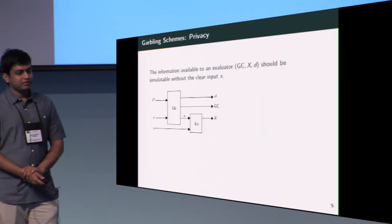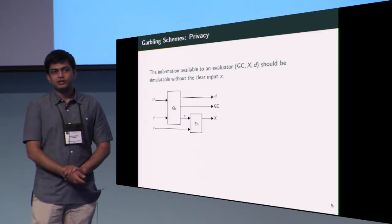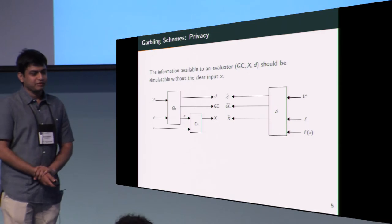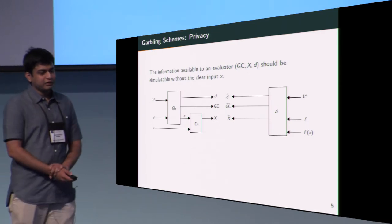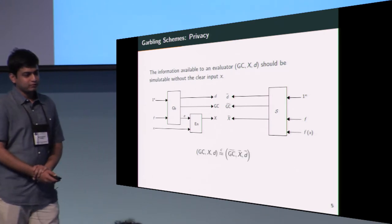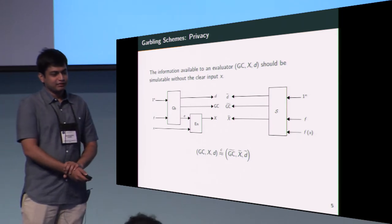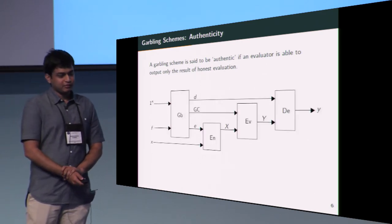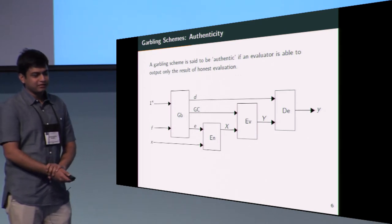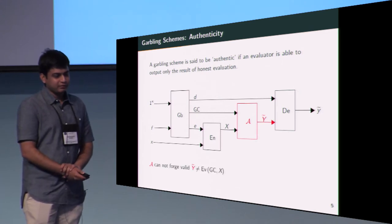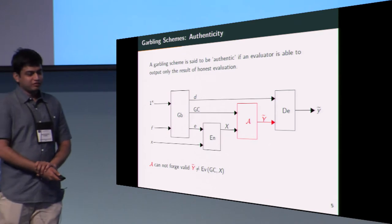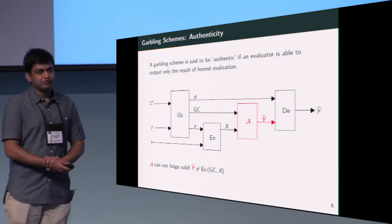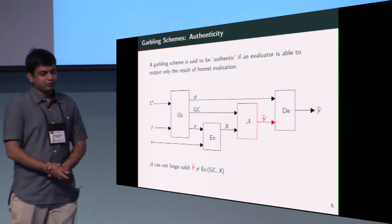Privacy informally captures that the information available to an evaluator leaks nothing about the input that was used to generate it. This is formalized by requiring the existence of a simulator that produces the same values—the garbled circuit, encoded input, and decoded information—without access to the actual clear input. It's computationally indistinguishable from honestly generated values. Authenticity captures the unforgeability of garbled outputs. If we're taking a look at the garbling scheme flowchart again, if we replace the evaluation box with an adversary who outputs some y tilde, an authentic garbling scheme ensures that any output of an adversary in this case is always the output of honest evaluation. An adversary can't output or rather forge an output that's also valid and also not the output of honest evaluation.